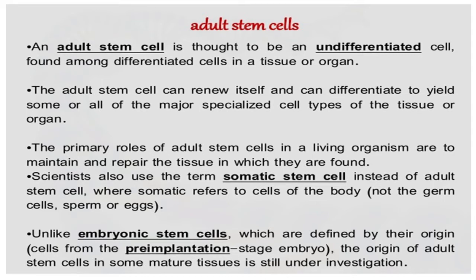Unlike embryonic stem cells, which are defined by their origin in the pre-implantation stage of the embryo, the origin of adult stem cells in some mature tissues is still under investigation. There are two types of stem cells: embryonic stem cells and somatic stem cells. Embryonic stem cells are present in embryos, and somatic cells are present in adults.